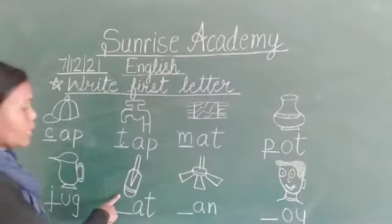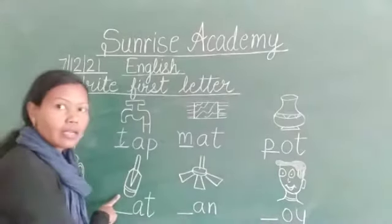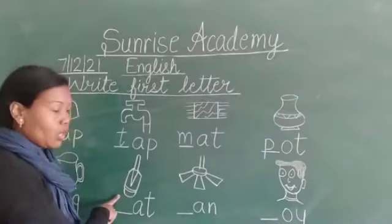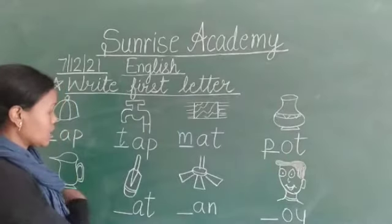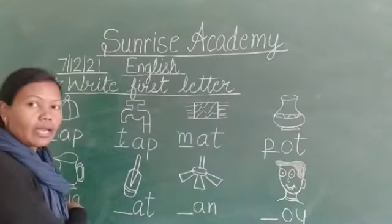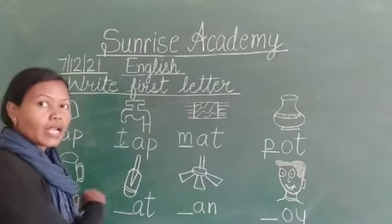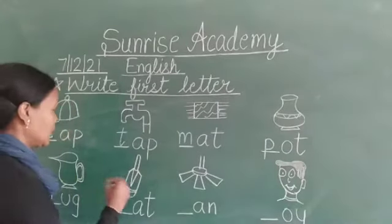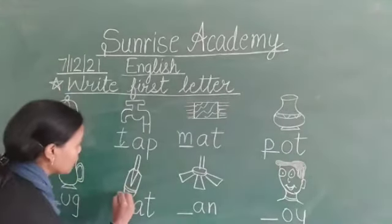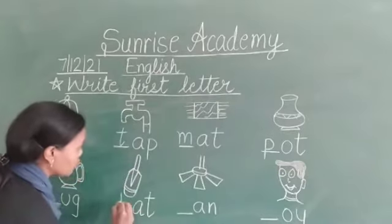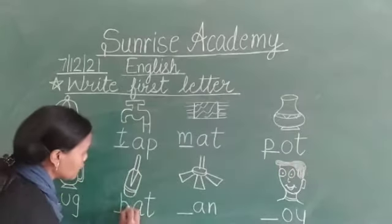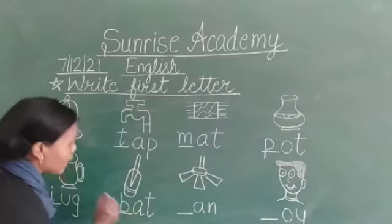Next picture — boys love to play with this. What is it? Bat. B. So, what will we write? B. B, A, T — bat.